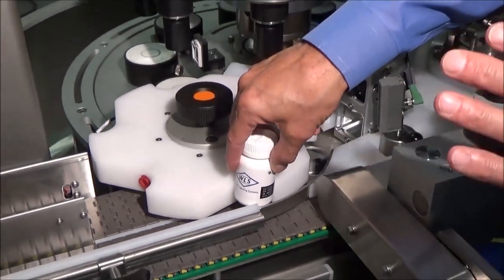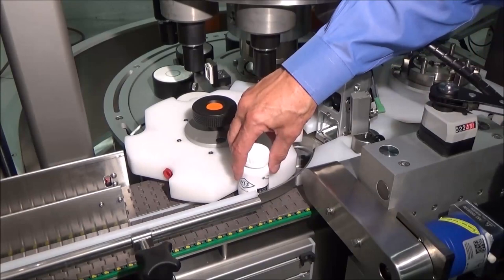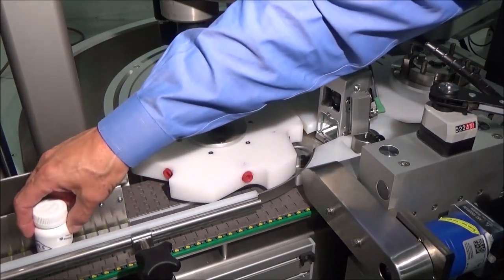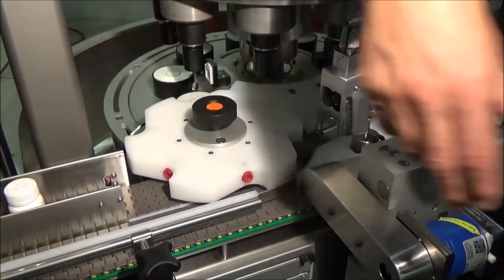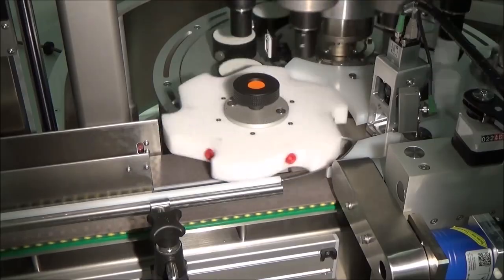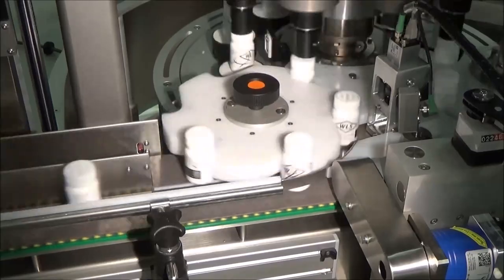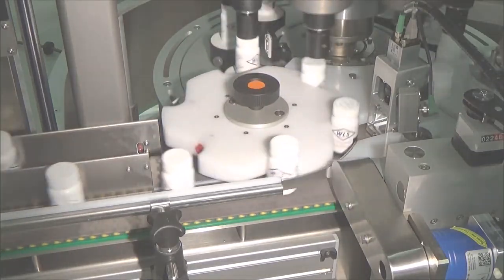As the bottle proceeds towards the exit, it is either released onto the good product conveyor or it is held until it is positioned for release onto the reject conveyor. The vacuum reject system can selectively reject products at the highest speeds the labeler is capable of.